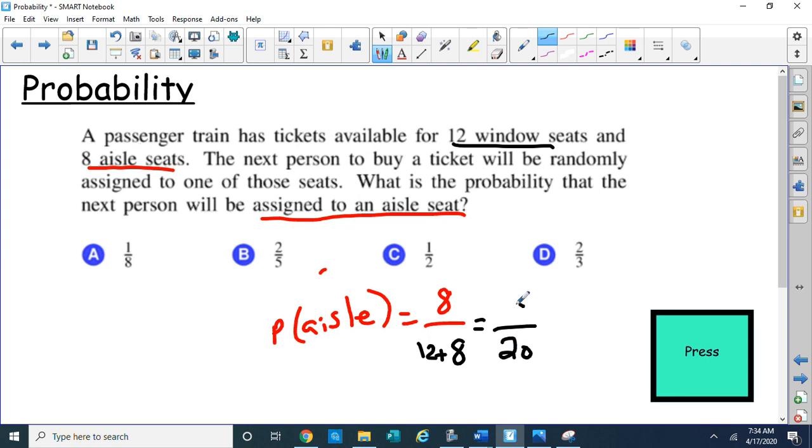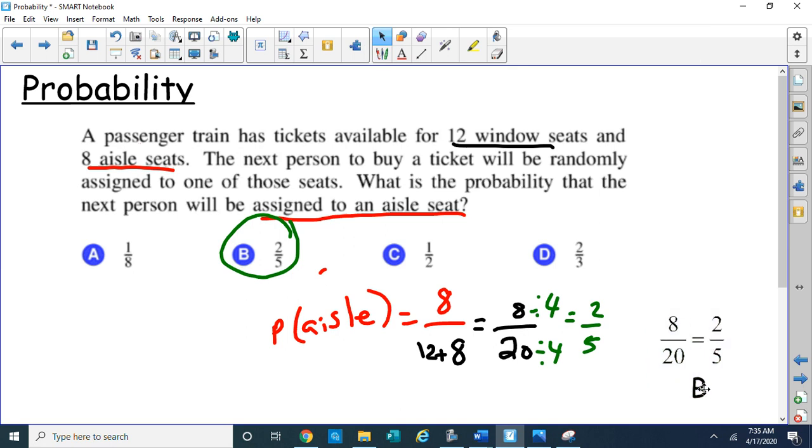So there would be my fraction, 8 out of 20. But hey, I don't see that. So let me reduce this a little bit. Let's divide this by 4. 8 divided by 4 is 2. And 20 divided by 4 is 5. So do they have 2 fifths? There it is. Choice B. So my choice answer is choice B. 8 twentieths equals 2 fifths. So choice B is the probability of getting your aisle seat. Okay. That wasn't bad. Let's keep going. More probability.